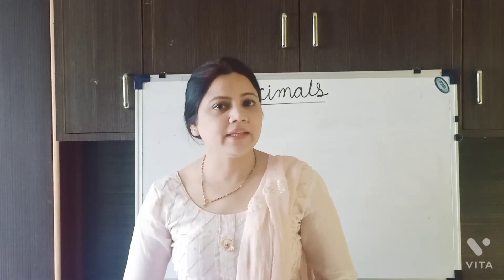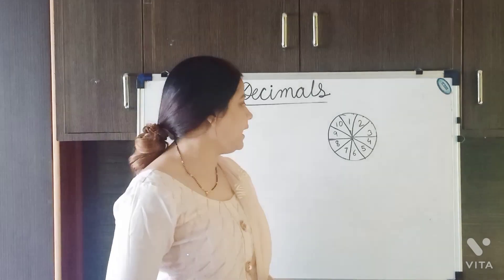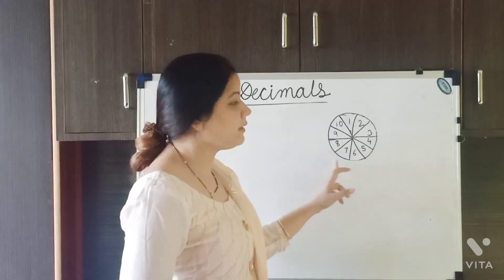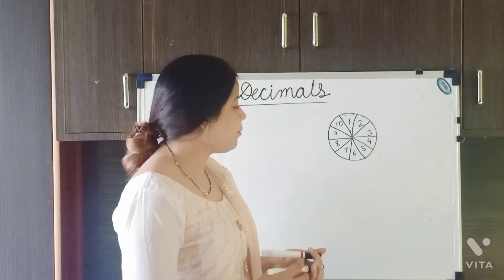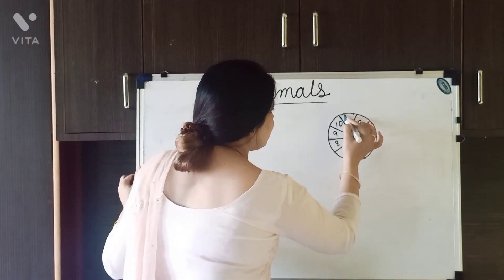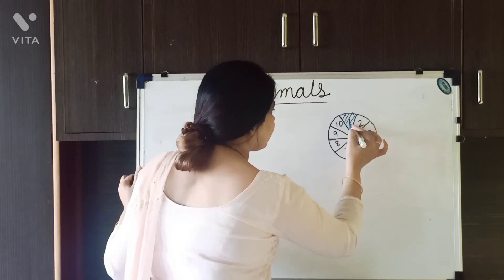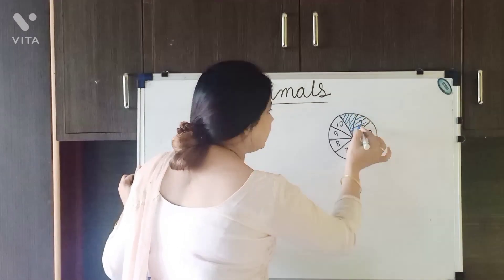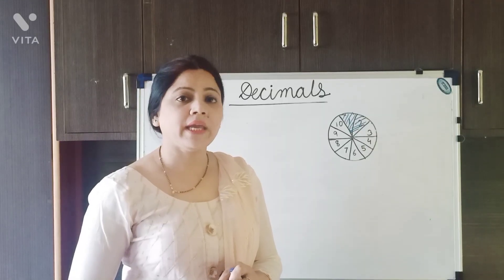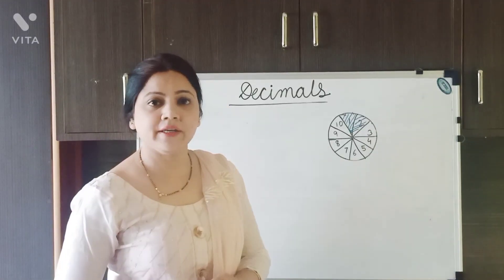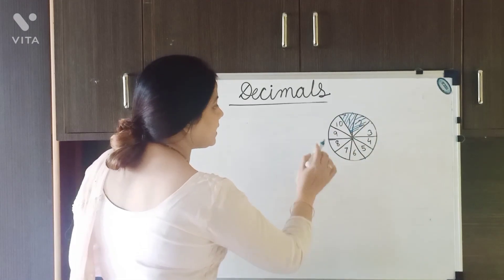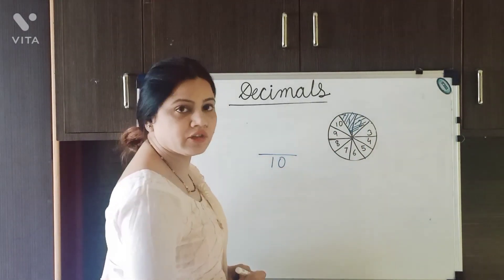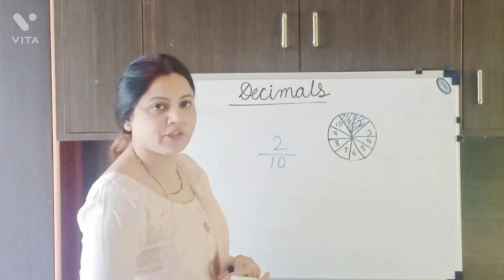I have made a circle here and distributed it into 10 equal parts. I am going to shade 2 of its parts. Now, how can we write the fraction of the shaded part? There are 10 parts in total, and 2 parts are shaded.